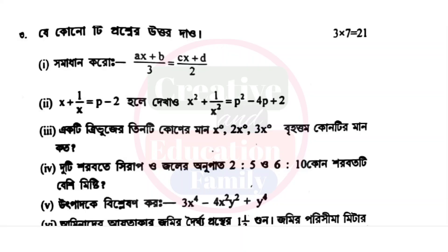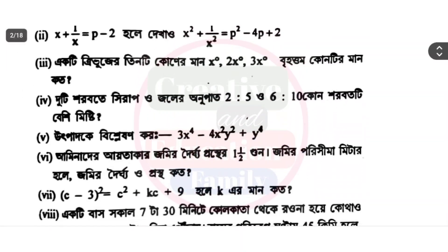The angle values: x degree, 2s degree, 3x degree — find which angle is the largest. 2 is 2, 5 is 0, 6 to 10 — find the largest angle. Factorize: 3x to the power 4 minus 4x square y square plus y to the power 4.